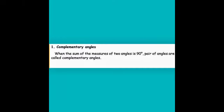The first one is the complementary angle. When the sum of the measures of two angles is 90 degrees, that pair of angles is called complementary angles. In other words, if you add any two angles and get 90 degrees, then those two angles are called complementary angles.